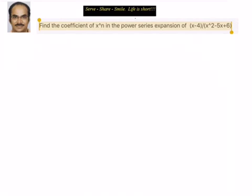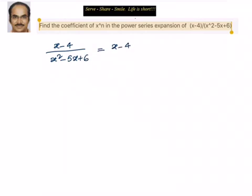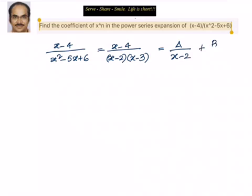We write down x minus 4 divided by x squared minus 5x plus 6, which I can also write as x minus 2 into x minus 3. Now this is equal to A by x minus 2 plus B by x minus 3. Simplifying, we get x minus 4 equal to A into x minus 3 plus B into x minus 2.